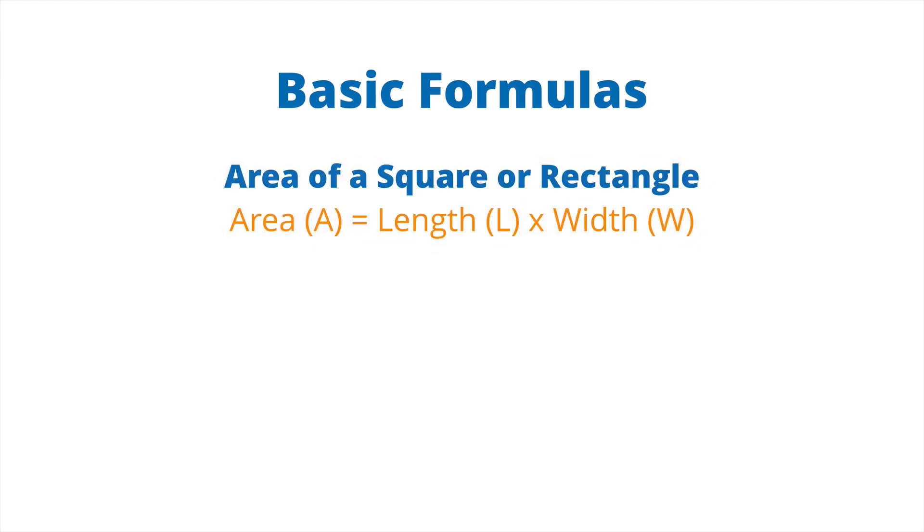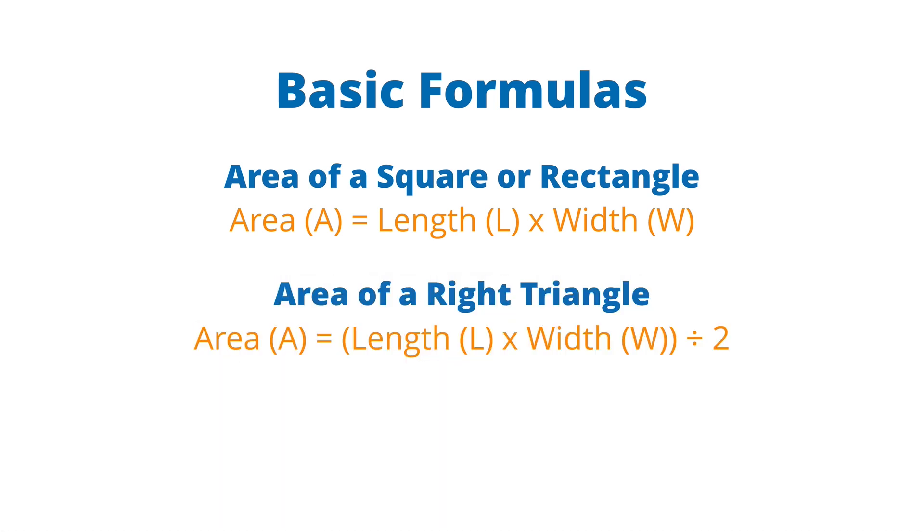In case geometry class was a while ago, it certainly was for me, here's a few basic formulas to calculate area. We have the area of a square or rectangle, which is length times width. We have the area of a right triangle, which is length times width divided by two. And finally, we have the area of a circle, which is pi, 3.14, times radius squared.